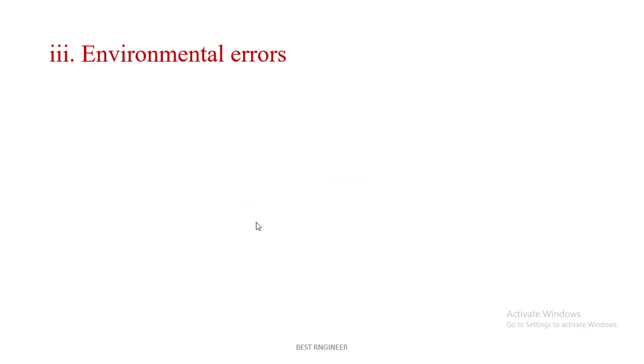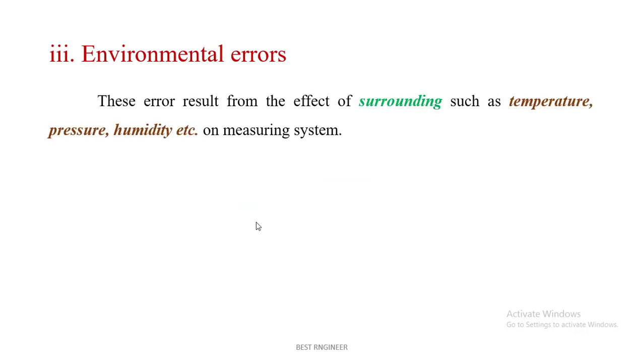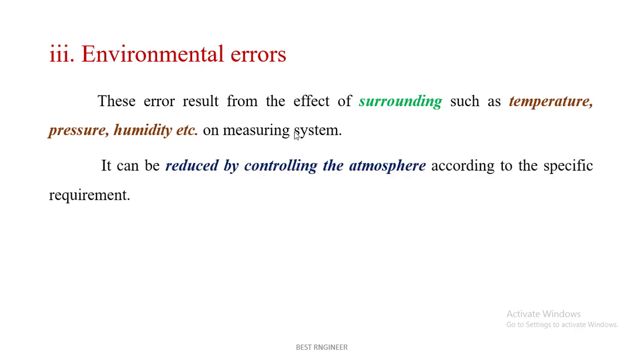Environmental errors: these are resulting from the effect of surroundings such as temperature, pressure, humidity on the measuring systems. It can be reduced by controlling the atmosphere according to the specific requirements.